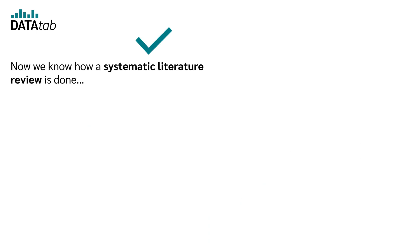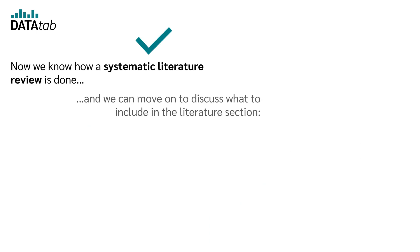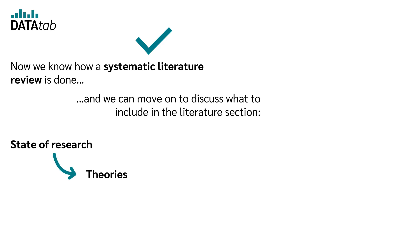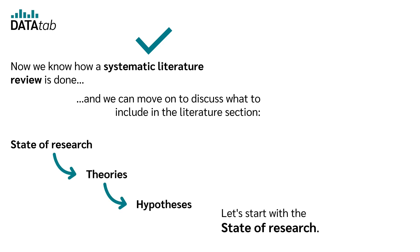Now we know how a systematic literature review is done, and we can move on to discuss what to include in the literature section: state of research, theories, and hypotheses.